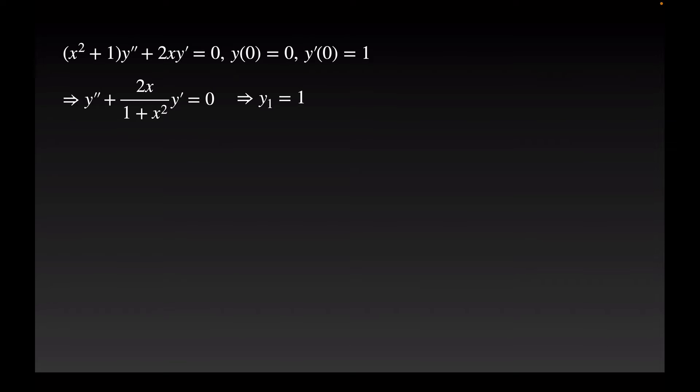Once I know a first solution, I can use reduction of order to find a second linearly independent solution. So y2, if I have equation in standard form, is just y1 times the integral of 1 over y1 squared e to the negative integral p of x dx dx. So now I just need to integrate this function p of x with respect to x to get y2.